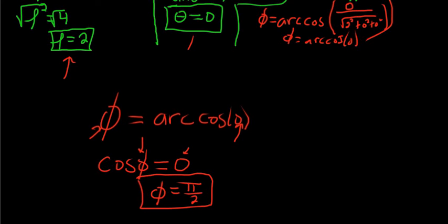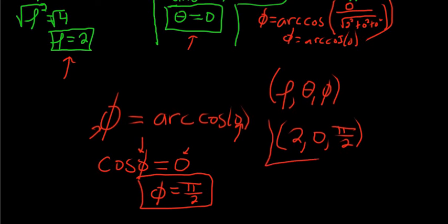We have our answers here. The final answer is rho, theta, phi. So it'll be 2, theta is 0, and then phi is pi over 2. So (2, 0, π/2). Those are our spherical coordinates. I hope this video has been helpful. That's it.